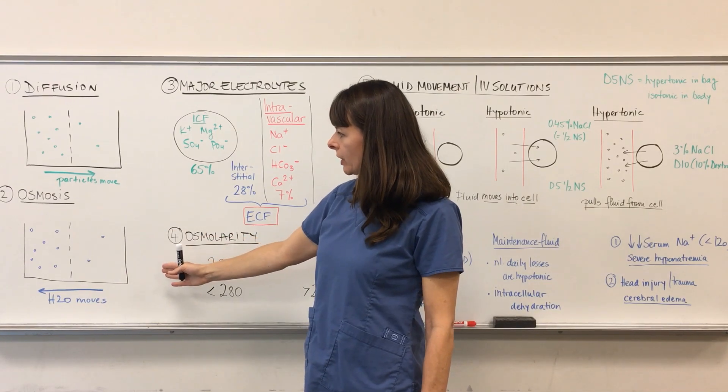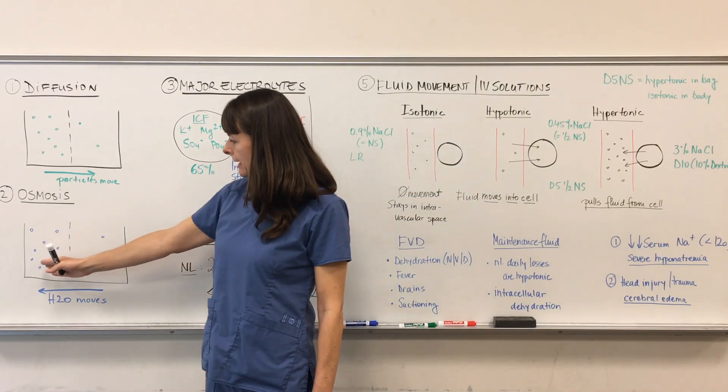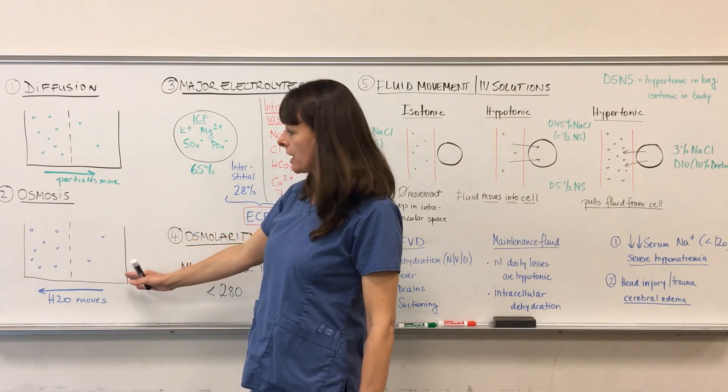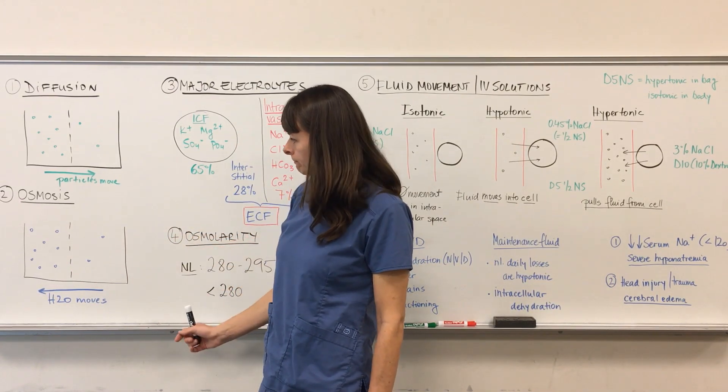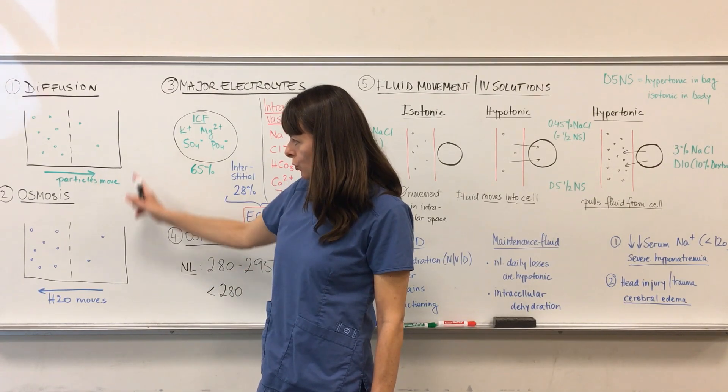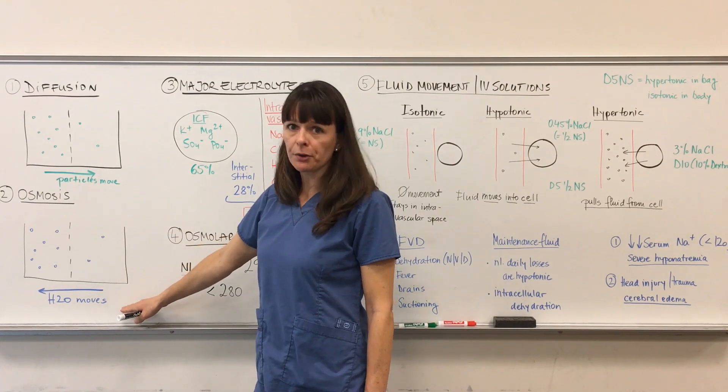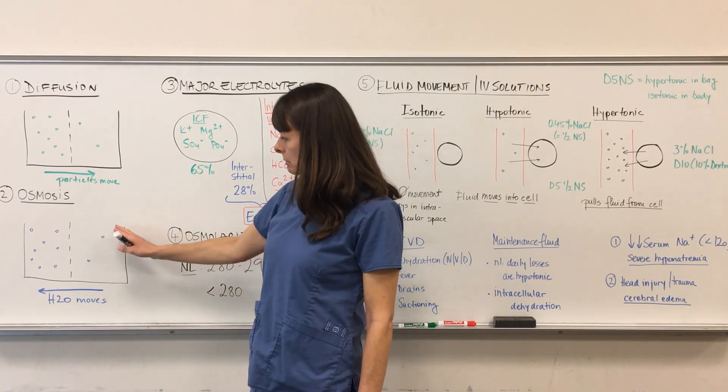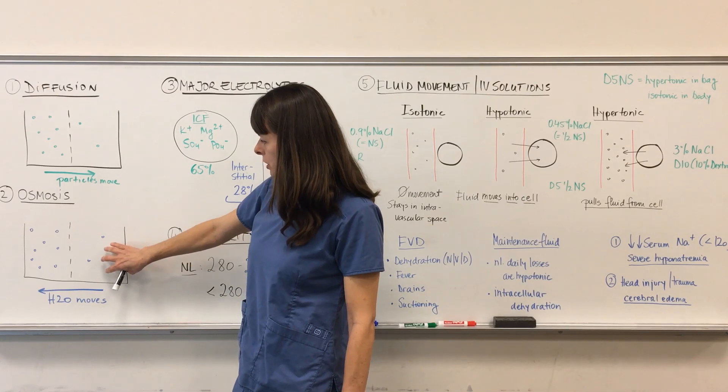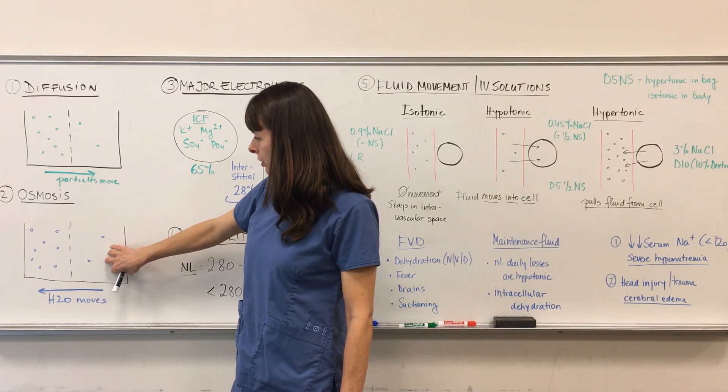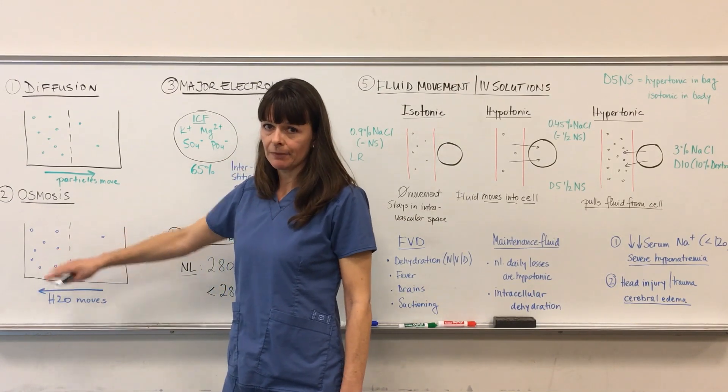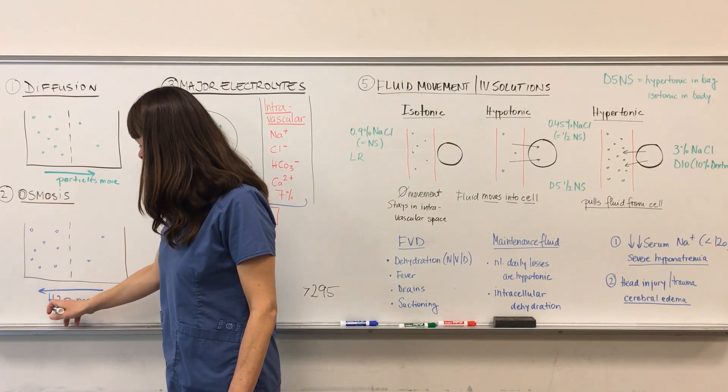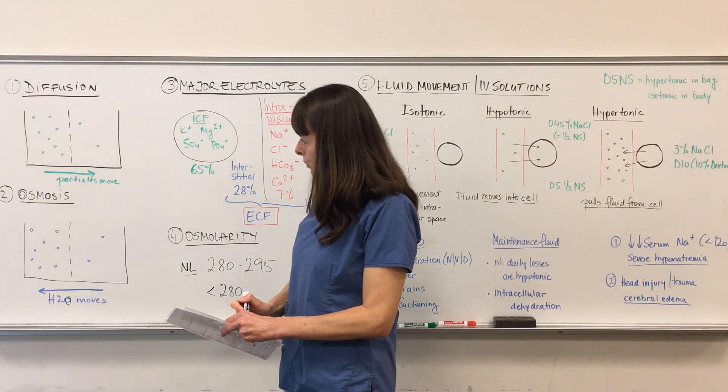In osmosis, if you see the beaker down there that I drew, again on one side, on the left side here, we have a higher concentration of particles. Then we have our semi-permeable membrane and on the other side we'll have a lower concentration of particles. Now see the difference here? Green and blue, and in osmosis the water moves, not the particles but the water. Again the body strives for homeostasis, but in osmosis the water here moves from the concentration of higher on the right side here to the lower concentration on the left side. Something that I like to remember this by is osmosis H2O. Okay, so keep that in mind as we move on.